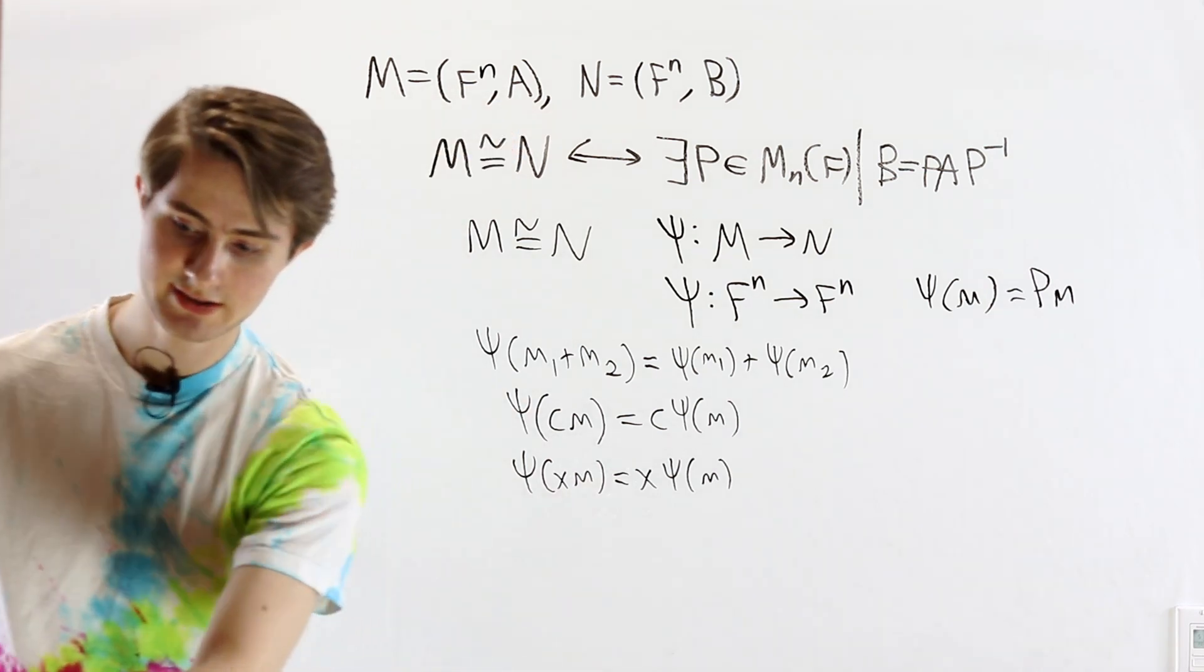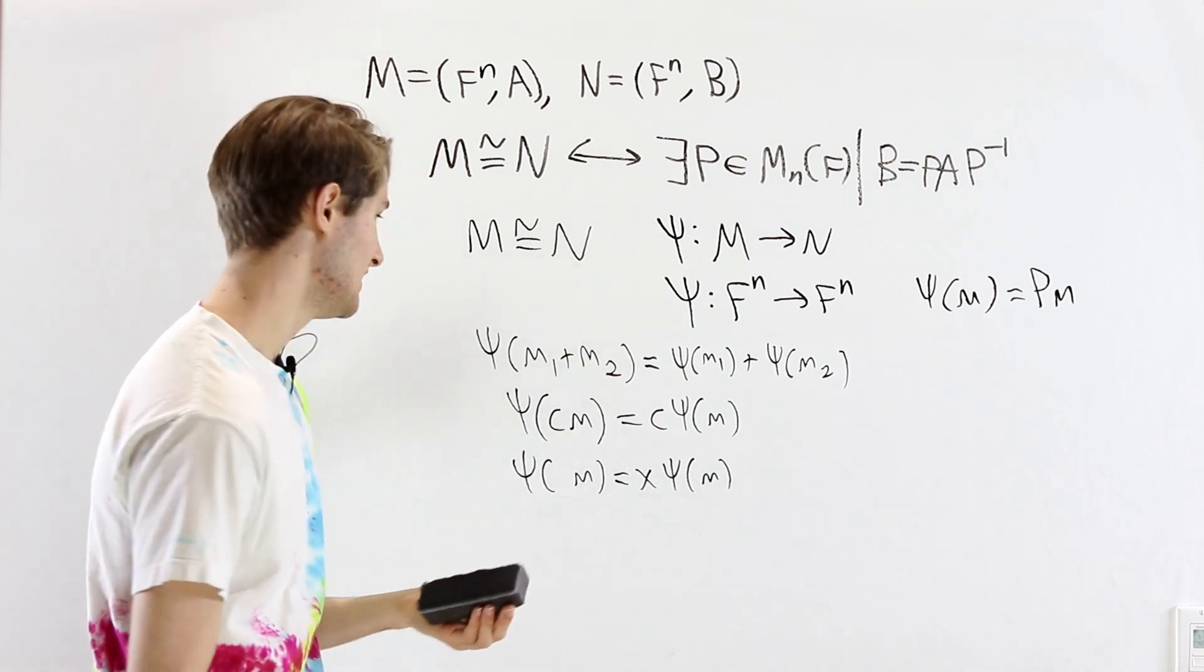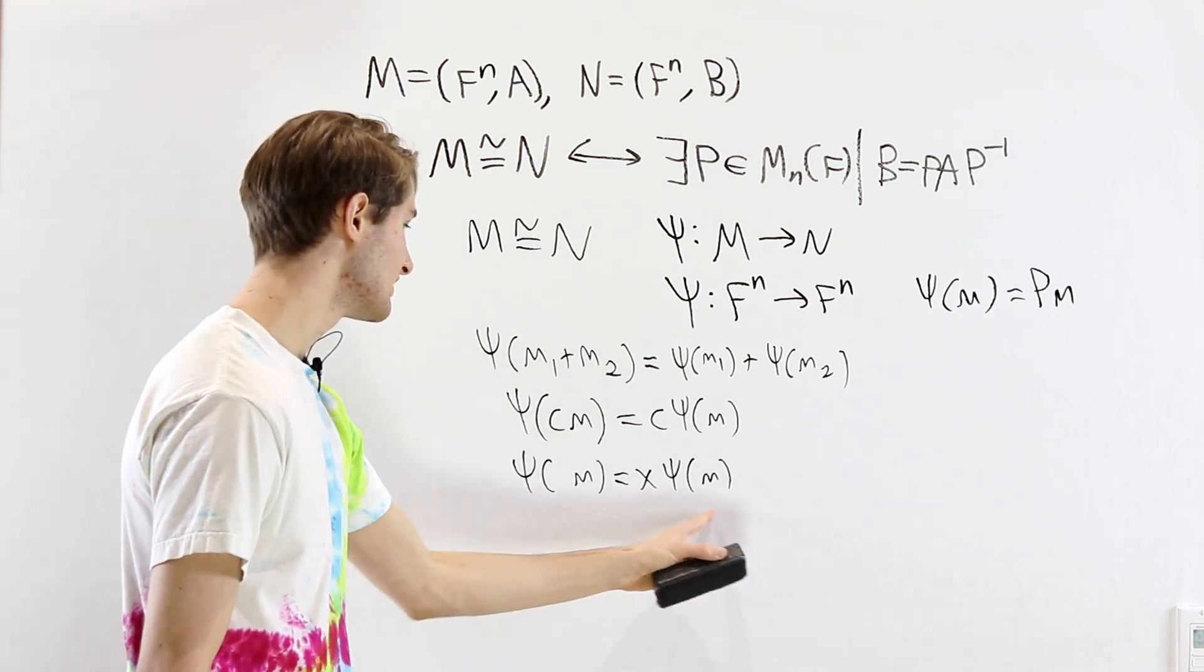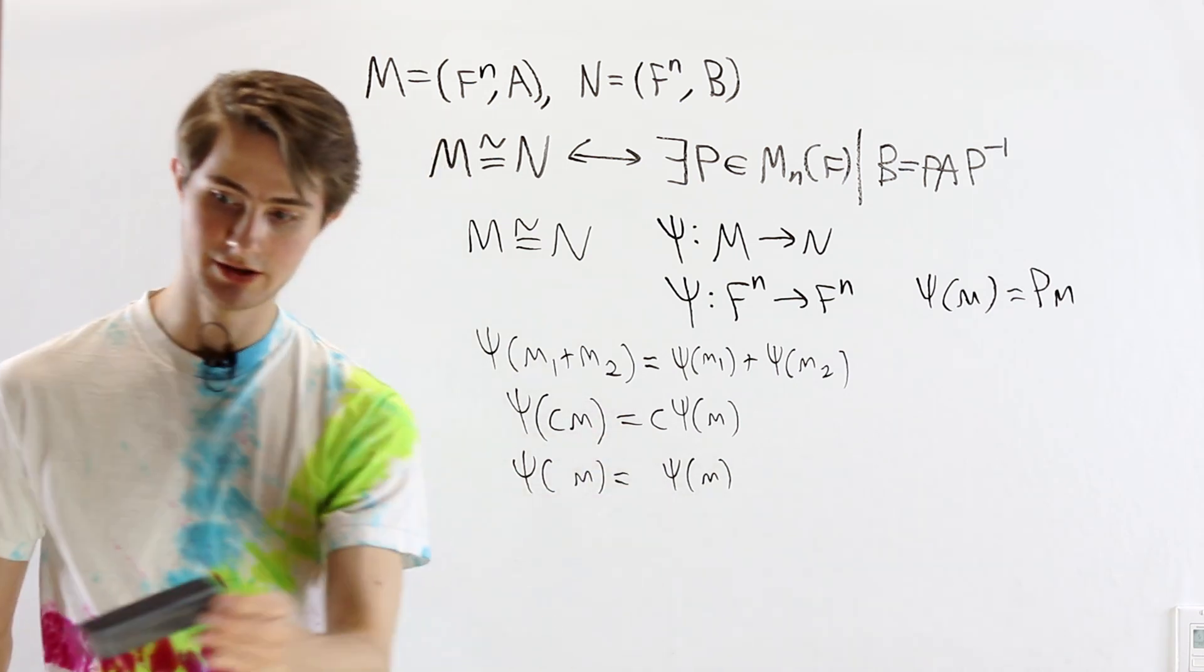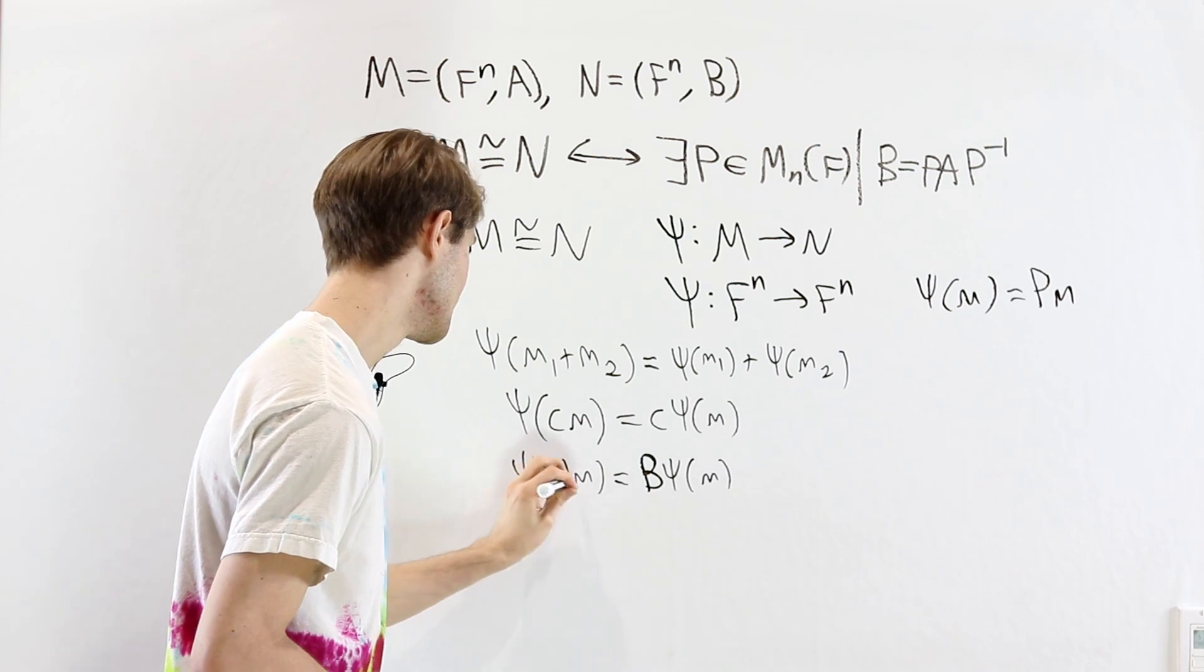So in here, x times m, this is the same thing as A times m. Over here, ψ of m, that's in N. So multiplication by x is the same as multiplication by B over here.